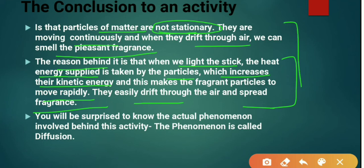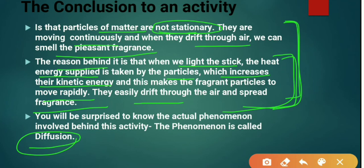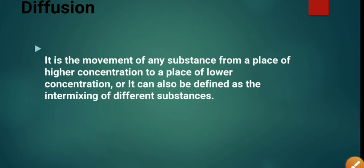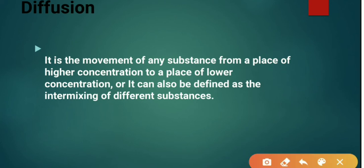This entire phenomenon — the conclusion of this activity — is called diffusion. This is a very important concept of this chapter. Diffusion is the movement of any substance from a place of higher concentration to a place of lower concentration. It can also be defined as the intermixing of two substances.